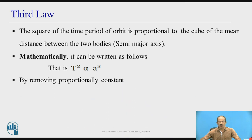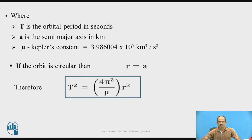By removing the proportionality constant, T² = (4π²/μ) × A³, where T is time period to complete one path, A is semi-major axis, and μ is Kepler's coefficient. μ is Kepler's constant, its value is 3.98004 × 10⁵ km³/s².